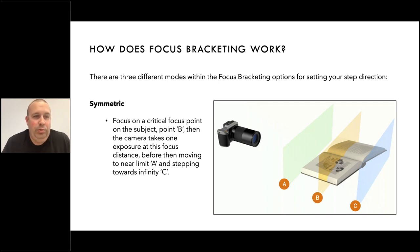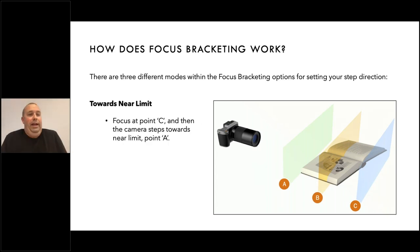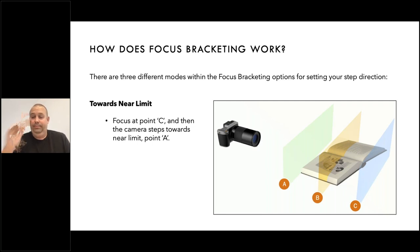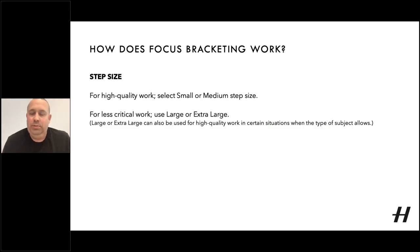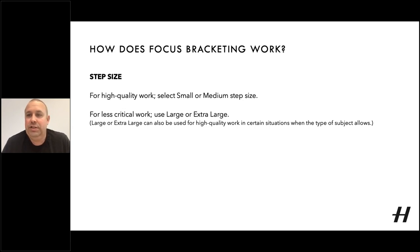With symmetric, the camera will take an exposure at that position before moving to near limit A and then stepping through towards C. The third option is towards near limit — this is the reverse of towards infinity, where it starts at point C and steps backwards towards near limit point A. Regarding step size: for high quality work in general terms, small or medium step size work best.